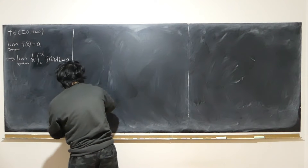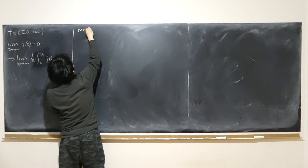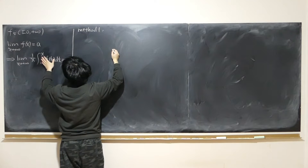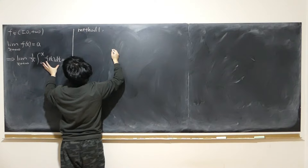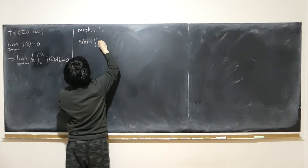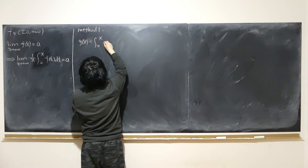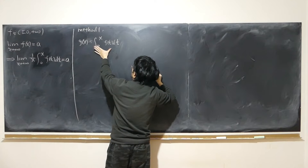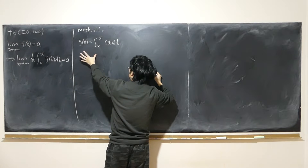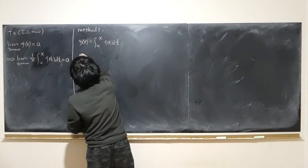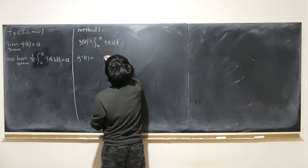The first method is to use L'Hôpital's rule. Since we're given the function is continuous from 0 all the way up to positive infinity, we can apply the fundamental theorem of calculus. We can say that the function g(x) is equal to the integral from 0 to x of f(t) dt. So g is differentiable, and the derivative of g with respect to x is f(x).